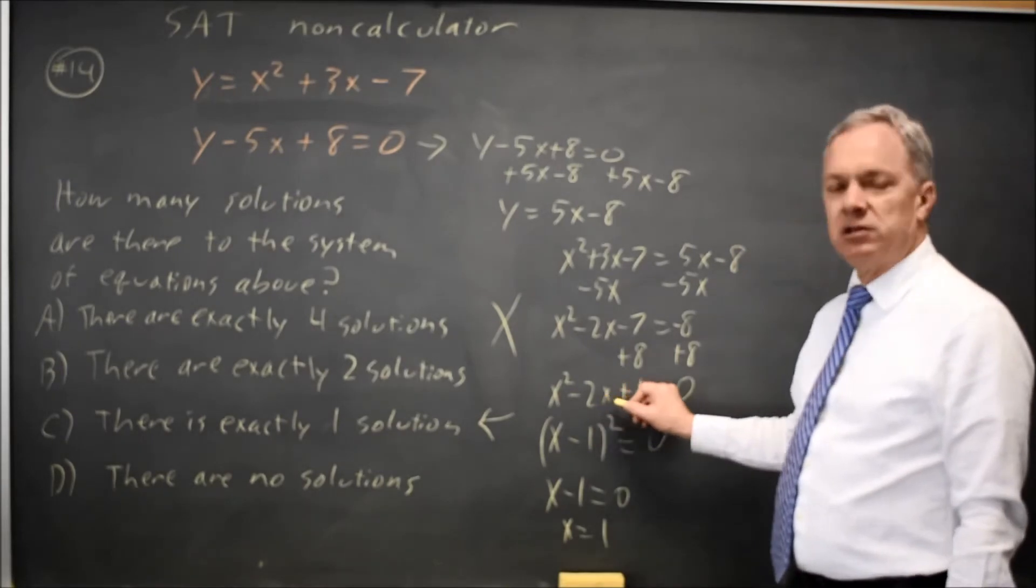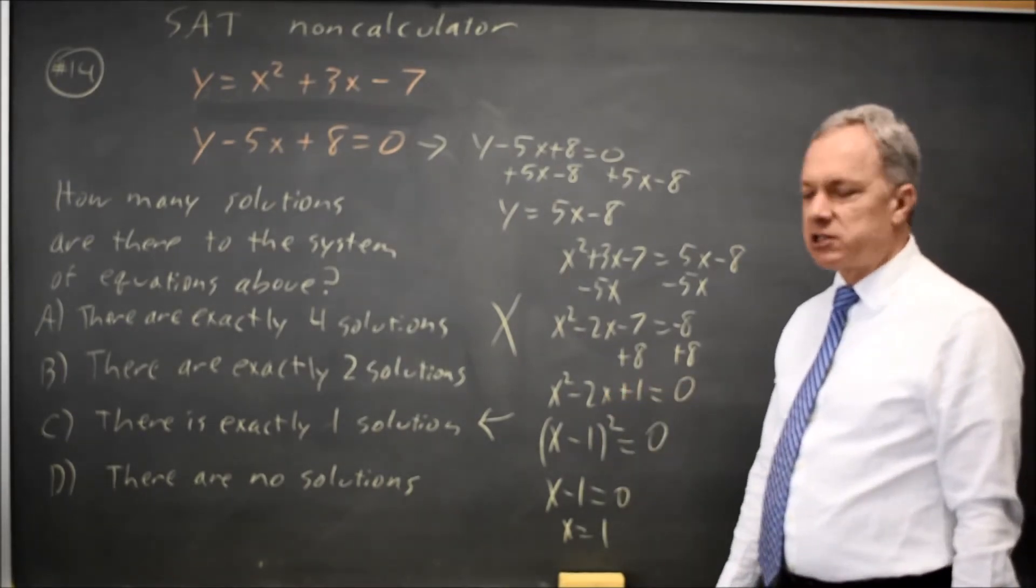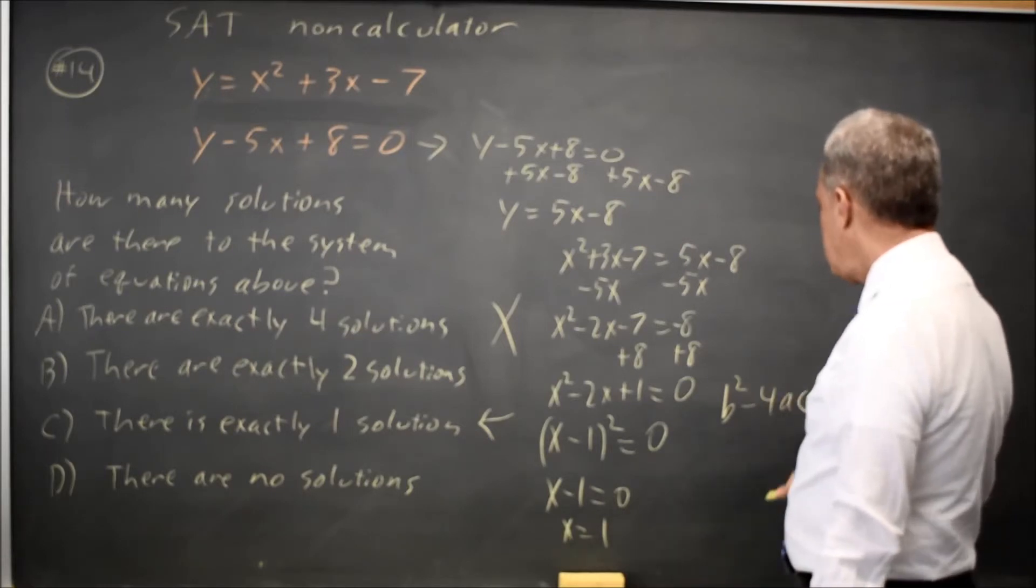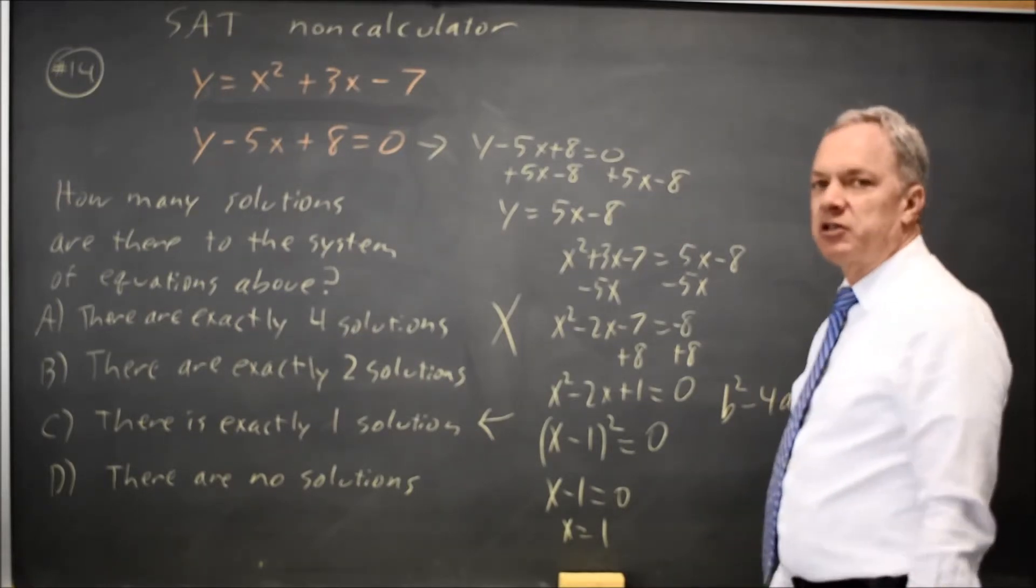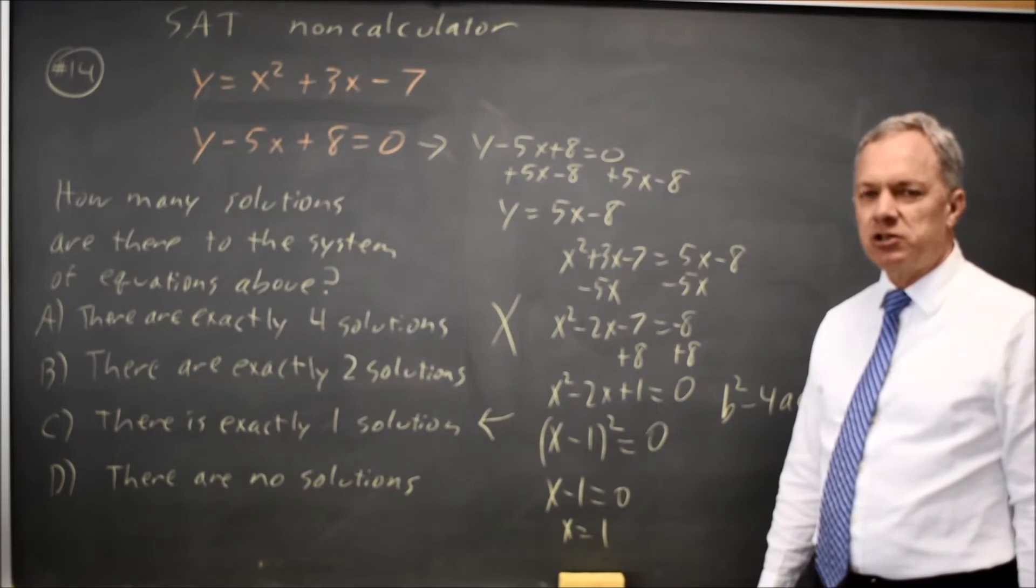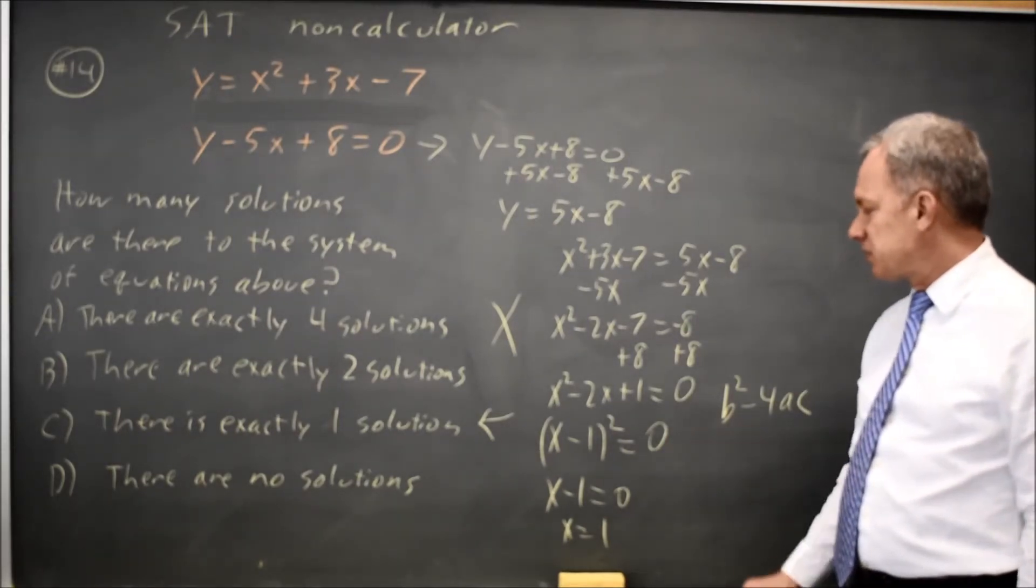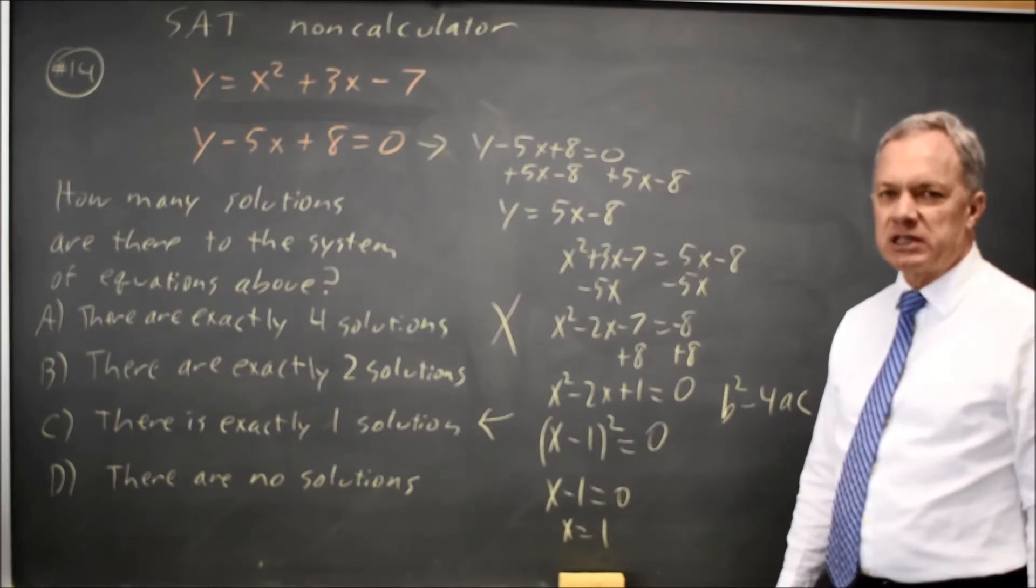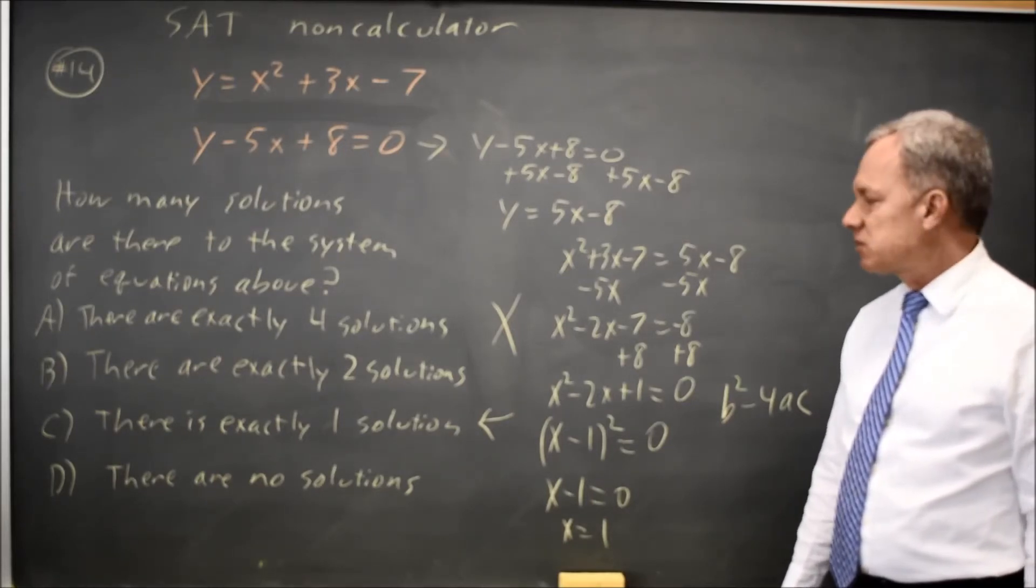Once I got down to the quadratic, I could have used the discriminant, b squared minus 4ac. If b squared minus 4ac is positive, there's two solutions. If b squared minus 4ac is 0, which it is in this case, you have one solution. And if b squared minus 4ac is negative, there are zero solutions.